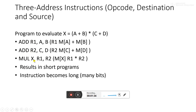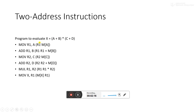When we multiply, we multiply the results in R1 and R2 and store the result in register X. These are three address instructions which can be used to evaluate any kind of algorithm or logical function. They result in short programs — a benefit is that many operations can be executed in a single line.